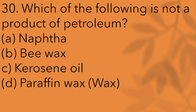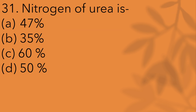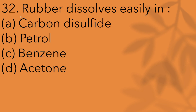Which of the following is not a product of petroleum? Rubber dissolves easily in carbon disulfide. The options include carbon disulfide, petrol, benzene, and acetone. Carbon disulfide — rubber dissolves easily in it.